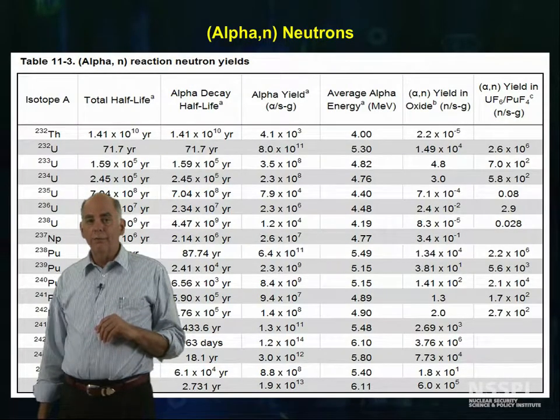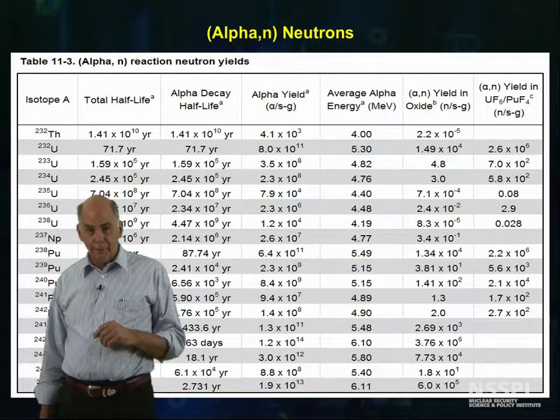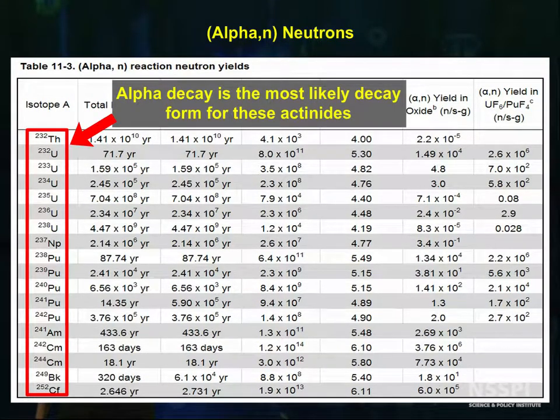Another way to get neutrons from the higher actinides is from the alpha-N reaction. Remember that the most likely form of decay for these actinides is alpha decay.